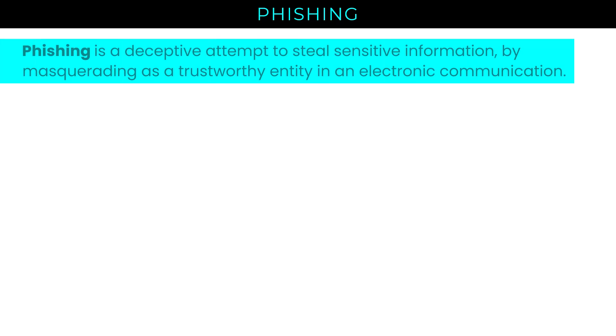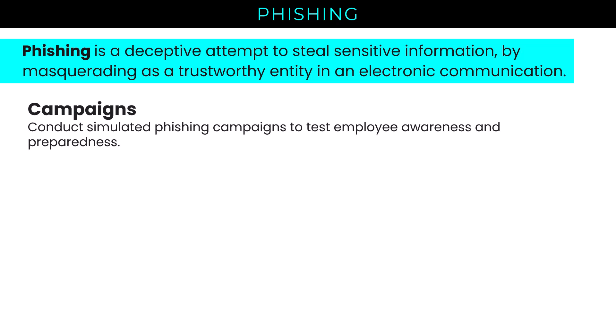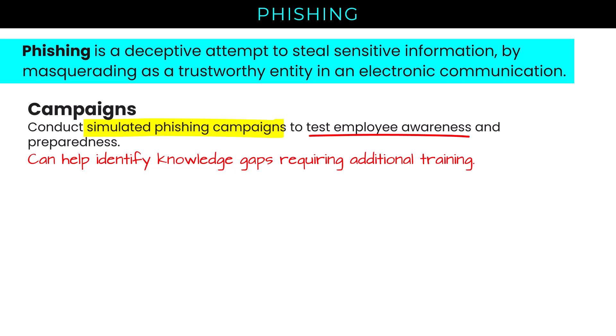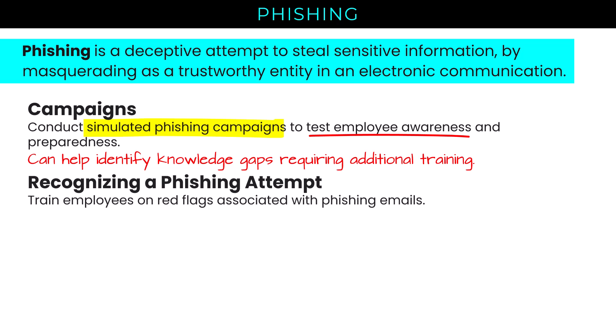Phishing is a deceptive attempt to steal sensitive information by masquerading as a trustworthy entity in an electronic communication — whether email, text message, or voicemail. To prepare employees, number one, conduct simulated phishing campaigns to test employee awareness and preparedness, helping identify knowledge gaps requiring additional training. Many enterprise email platforms and third-party products allow you to create realistic simulated phishing messages. Employees who click and fail can be redirected to training in real time — where clicking that link says, 'You've been phished. Let's turn this into a training opportunity.'